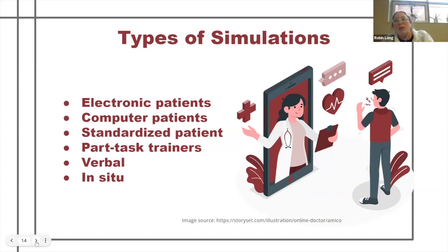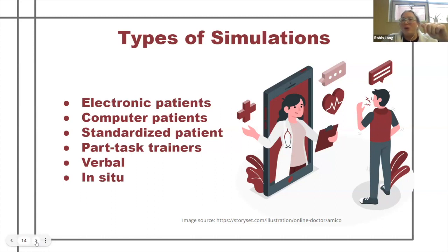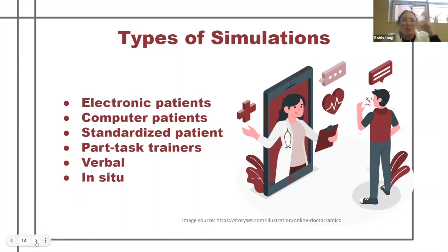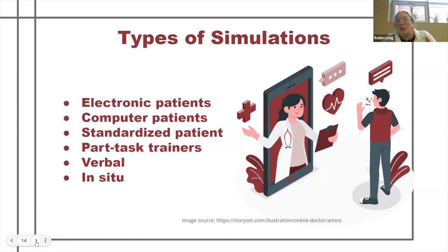As the patient follows the learner throughout a learning journey, a relationship develops. Computer and electronic patients are your simulator-type patients — either the mannequin itself, which can have movement via gears, or a computer patient where AI and machine learning software does things with that patient based on how the learner is interacting, making them reactive.